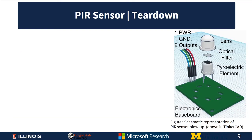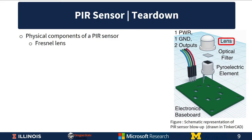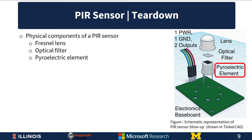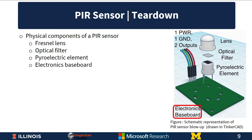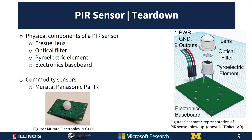Let us look at the teardown of a PIR sensor, shown in the blow-up figure on the right. A PIR sensor consists of four physical components going from top to bottom: first a Fresnel lens, followed by an optical filter, followed by a pyroelectric element, all mounted on an electronics baseboard. This design is commonly seen in commodity sensors such as Murata and Panasonic.